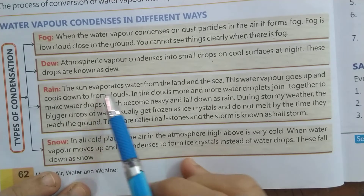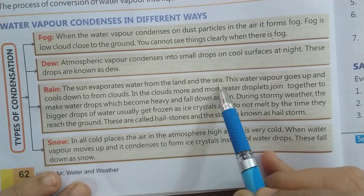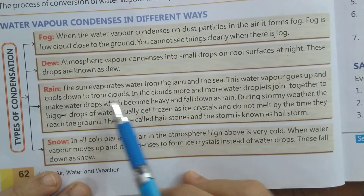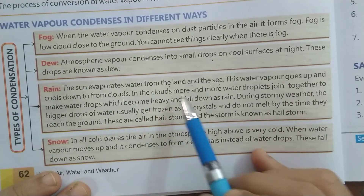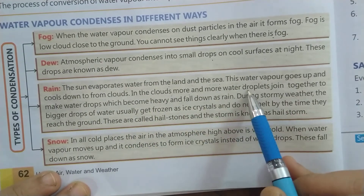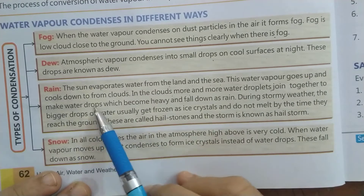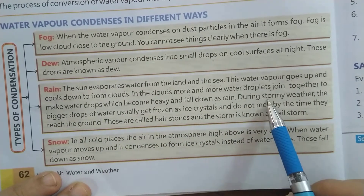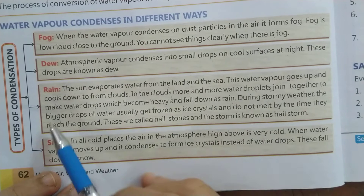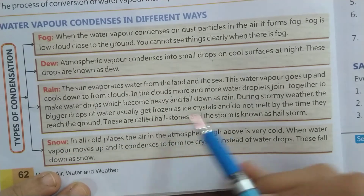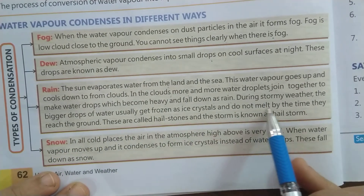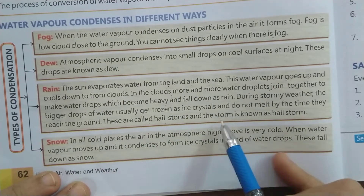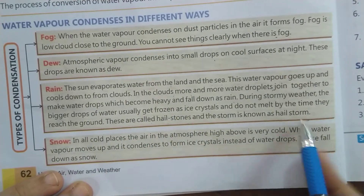Rain: the sun evaporates water from land and the sea. This water vapor goes up and cools down to form clouds. In the clouds, more and more water droplets join together to make water drops which become heavy and fall down as rain. During stormy weather, the bigger drops of water usually get frozen as ice crystals and do not melt by the time they reach the ground. These are called hailstones and the storm is known as a hailstorm.